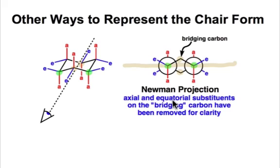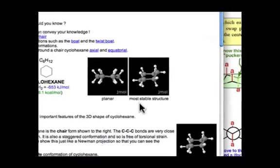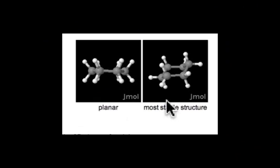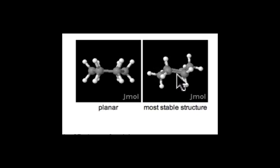It'll be clearer when we look at a three-dimensional structure. Now let's take a look at the structure of the chair form in three dimensions. Here's that most stable chair form. If we go ahead and look at that molecule carefully, you'll see that there are three substituents that are axial and pointing up, and three substituents that are axial and pointing down.